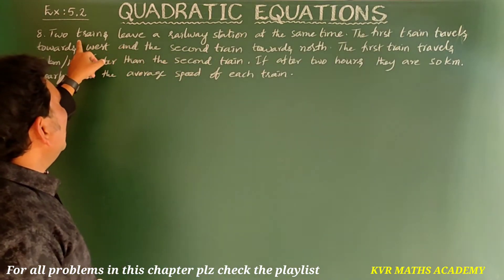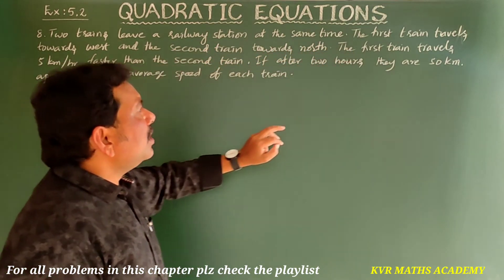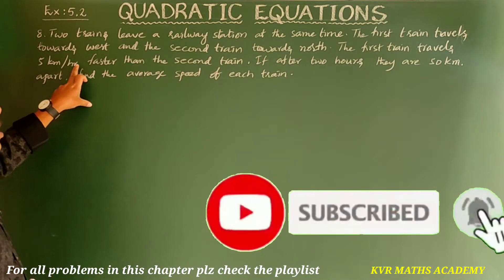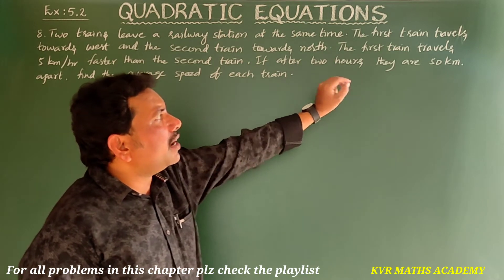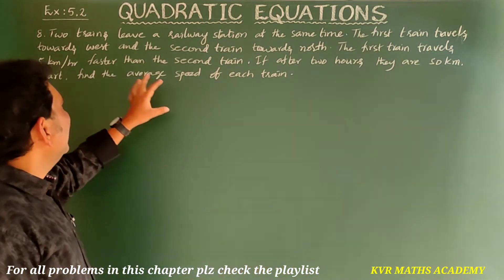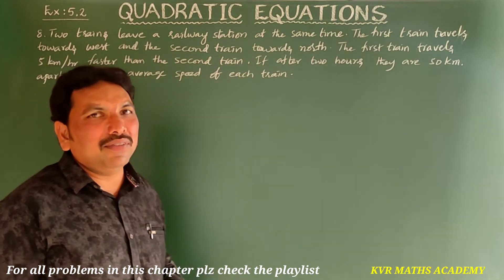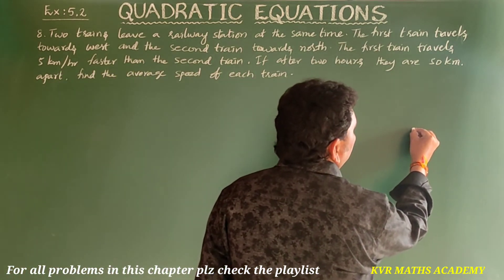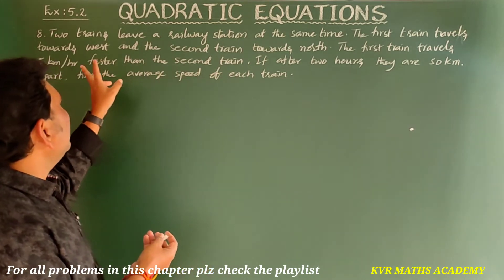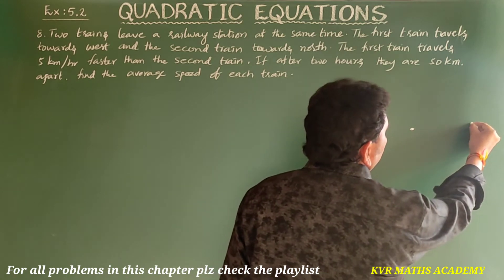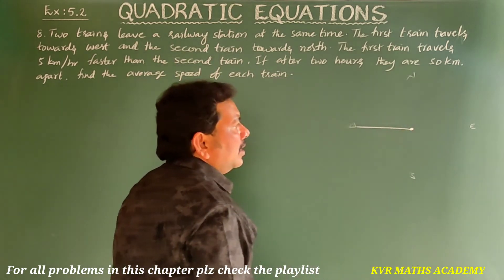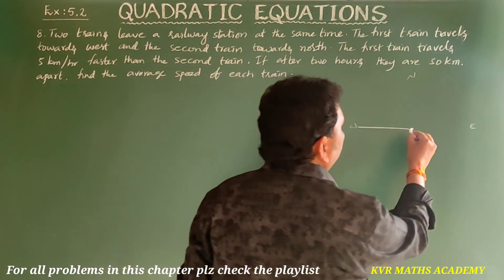Eighth question: Two trains leave a railway station at the same time. The first train travels towards west and the second train towards north. The first train travels 5 kilometers per hour faster than the second train. If after two hours they are 50 kilometers apart, find the average speed of each train.